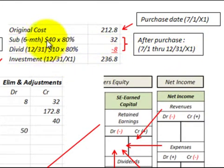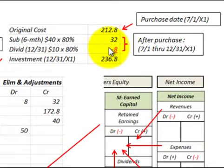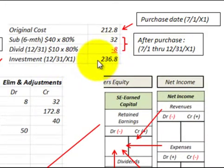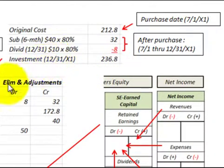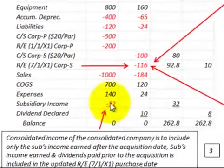The sub earned six months of income of $40,000; the parent gets 80%, which is $32,000. The sub declared a dividend of $10,000, the parent gets 80% of that, so that reduces the investment account by $8,000. Our investment account in the subsidiary is updated to $236,800 as of the end of the year, and that's what we'd have in our trial balance for the parent's interest in the subsidiary.